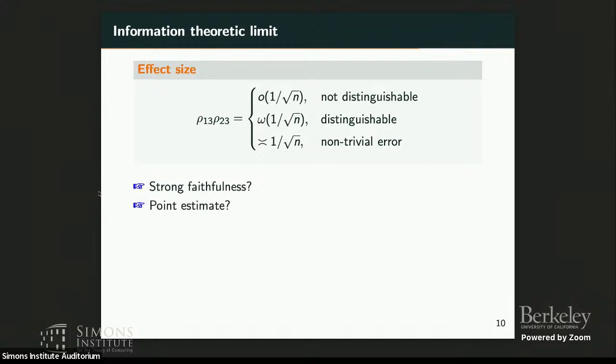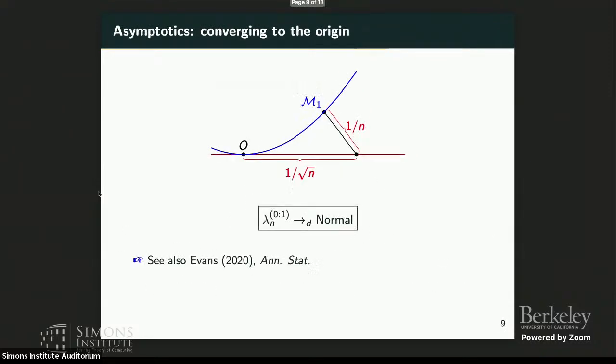Now suppose I impose strong faithfulness and say to differentiate models I always bound ρ away from zero. Specifically, we want all the ρs to be bounded away from 1/√n. But that means if our sampling distribution is in this region near the origin, the distance between models is actually 1/n.